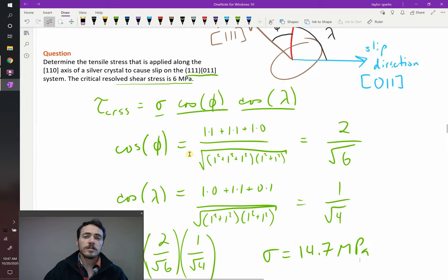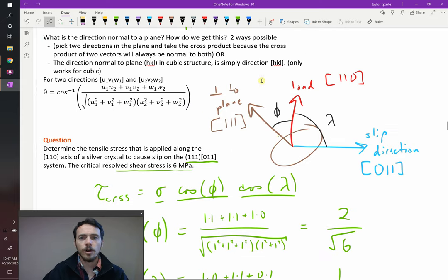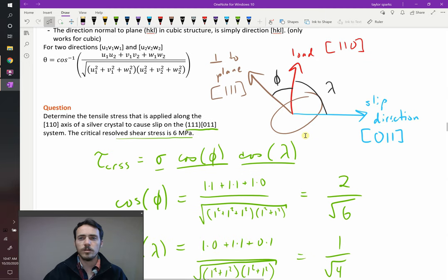Now this only works for single crystalline materials. As soon as you get to polycrystalline materials, they behave differently because it's not like you have one crystallographic plane in your material. You have lots and lots because every grain is oriented differently. But in single crystalline materials, you can do these sort of calculations.